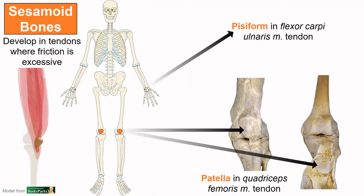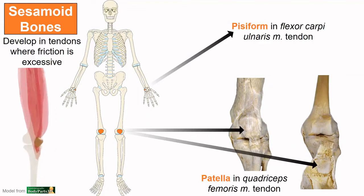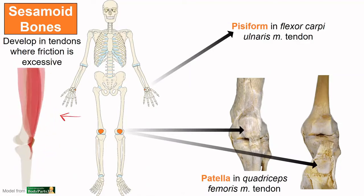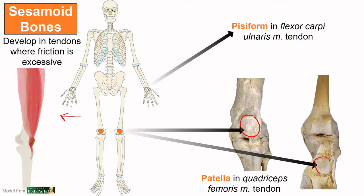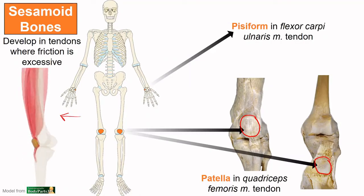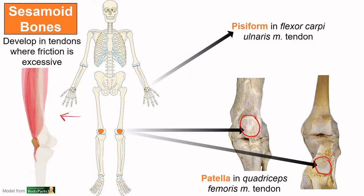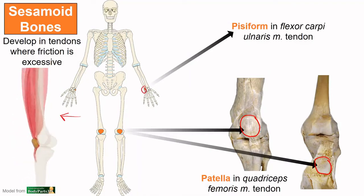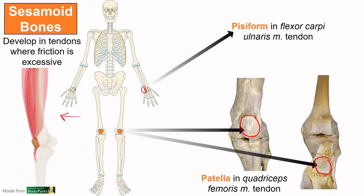Sesamoid bones develop in tendons, specifically those that experience a lot of friction. A huge group of muscles crosses the knee in the front of your thigh — the quadriceps, or the quads. Within the tendon of the quads we find the patella, a floating bone that doesn't articulate with another and develops directly in a tendon. Another example that almost all of us have is the pisiform, found within the tendon of one of our flexors of the wrist. Sesamoid bones may or may not develop elsewhere, so how many bones do we have? We usually say 206, but everyone is special.